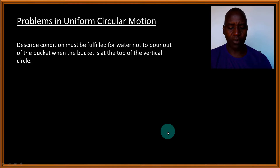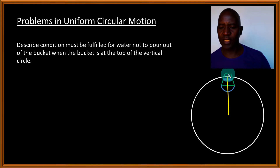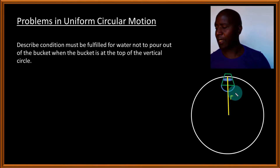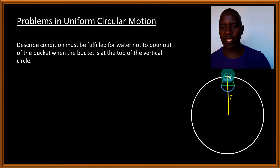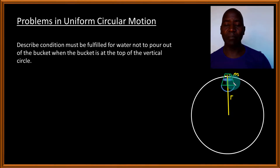Let's draw a diagram of that situation. On our diagram, this is the surface of the water in the bucket. The bucket is upside down — it is at the topmost part of the circle. The yellow line indicates the radius of the circular path, R. The water has mass m, and it is the water which is moving in a circular path.